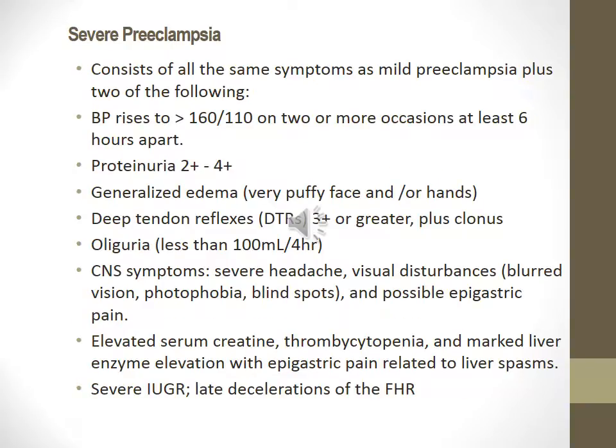Severe preeclampsia consists of all the same symptoms as mild preeclampsia plus 2 of the following: blood pressure greater than 160 over 110 on at least 2 occasions at least 6 hours apart, proteinuria 2+ to 4+, generalized edema, deep tendon reflexes. Central nervous system symptoms such as severe headache, visual disturbances, elevated serum creatinine, thrombocytopenia, markedly elevated liver enzymes, epigastric pain, and severe IUGR.